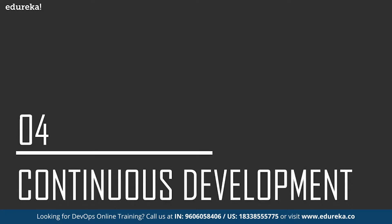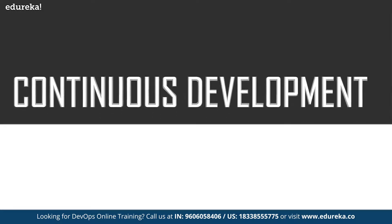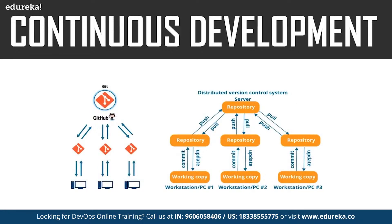The first phase of the DevOps lifecycle is continuous development. This phase involves planning and coding of the software application's functionality. There are no tools for planning as such, but there are a number of tools for maintaining the code. The vision of the project is decided during the planning phase, and then the actual coding begins. The code can be written in any language, but it is maintained using version control tools. The most popular tools used are Git, SVN, Mercurial, CVS, and Jira. Also, tools such as Ant, Maven, and Gradle can be used for building or packaging the code into an executable file so that it can be forwarded to the next phases.